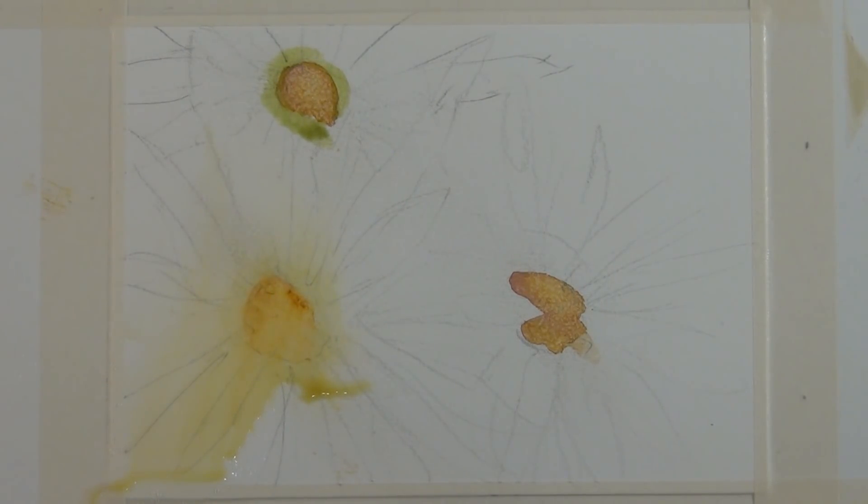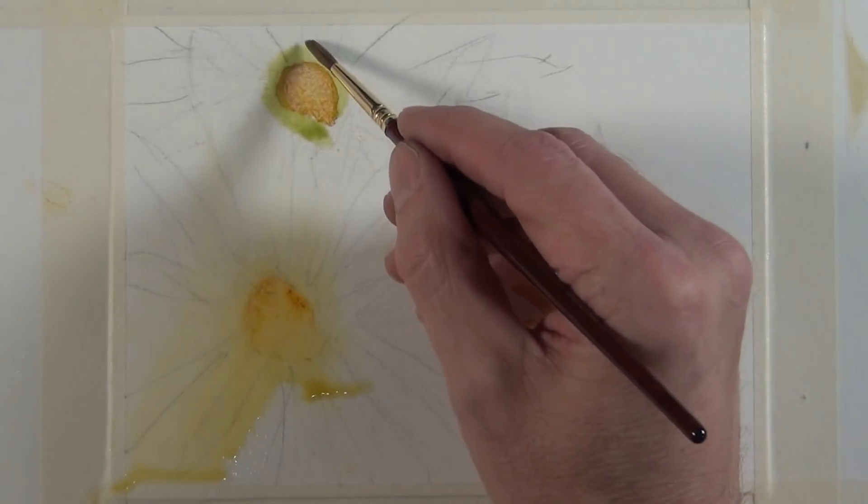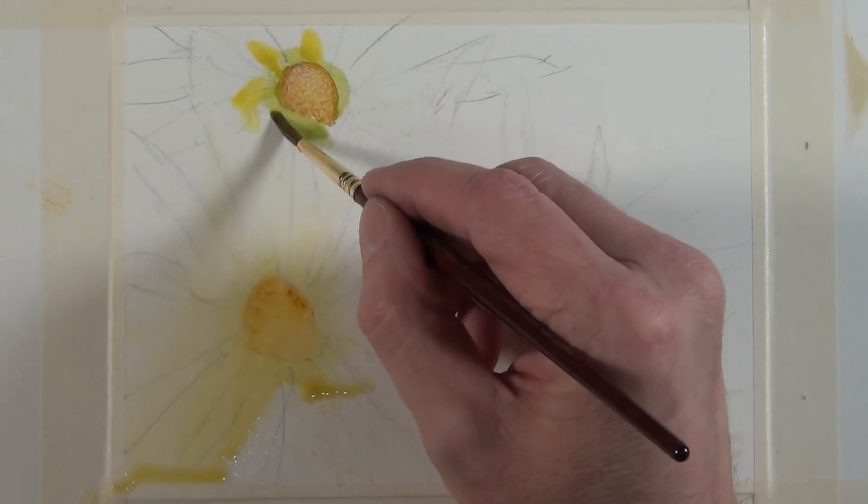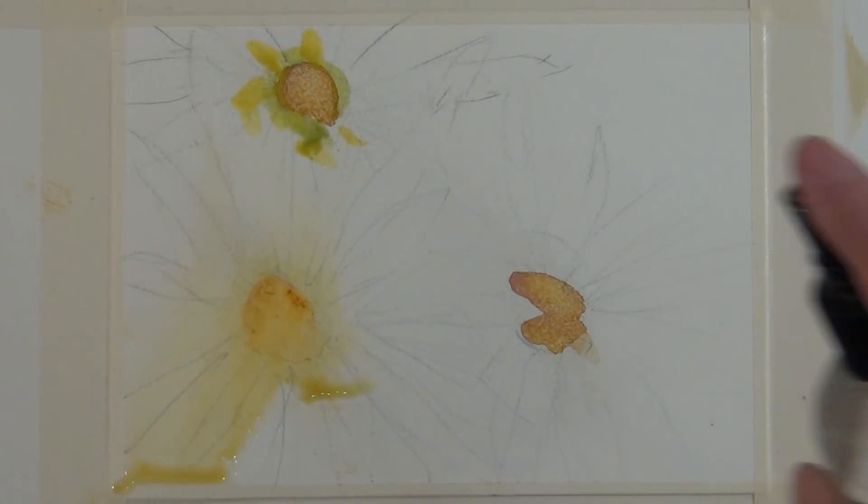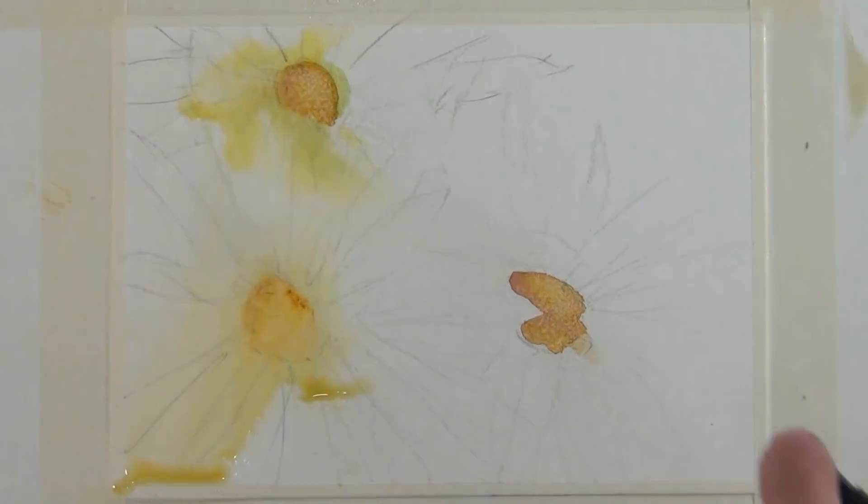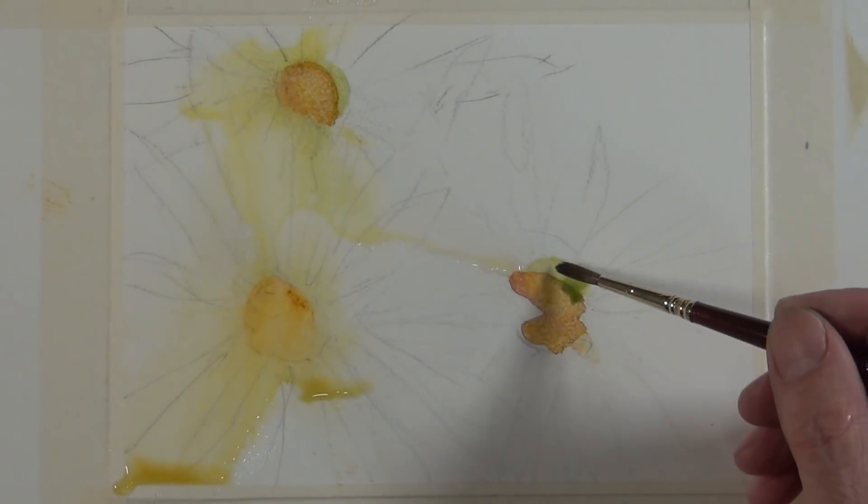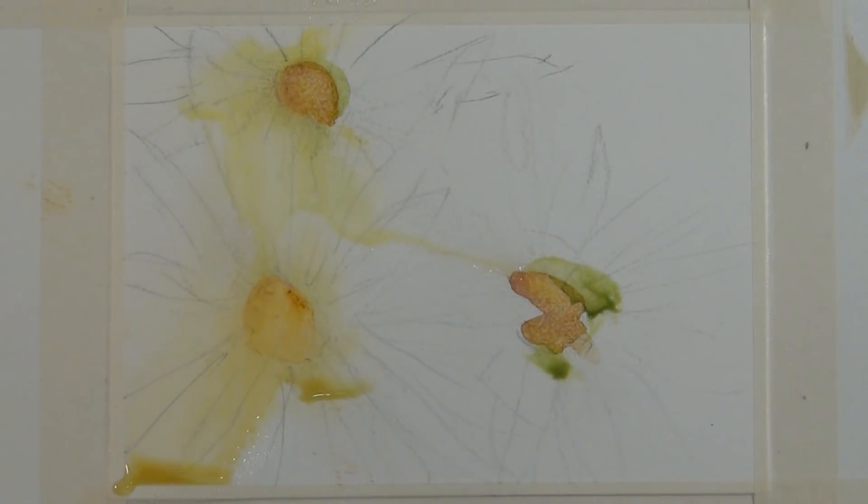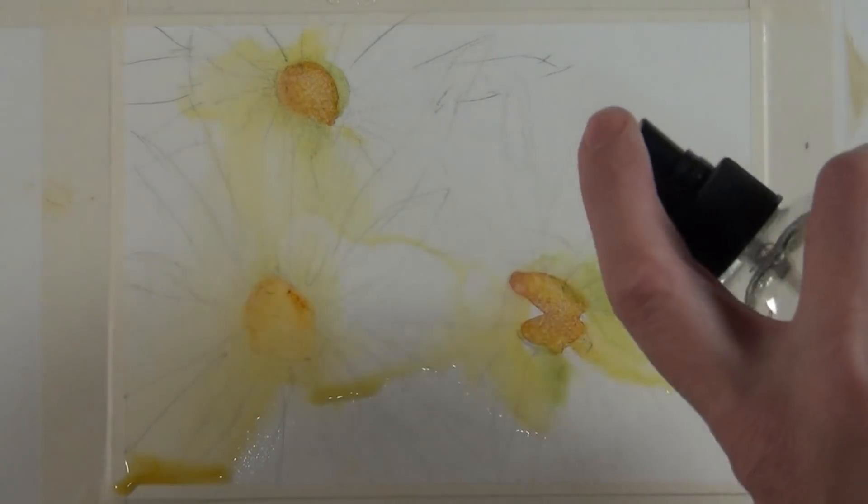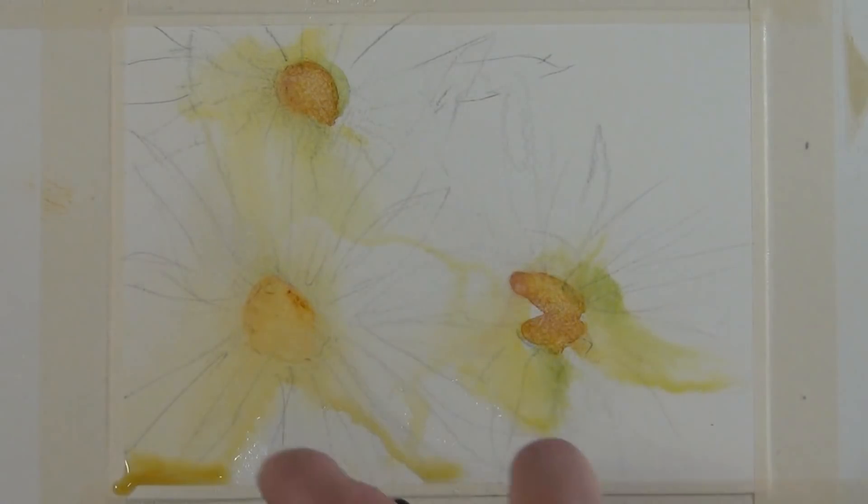And I take the same approach here with the other two flowers, putting the cad yellow light and sap green and then spraying it out with a fine mist spray bottle. And here I do it to the third flower. When I do use a spray bottle, I rarely spray it straight at the paper. I'm normally using it at an angle to create some sort of a directional flow with the spray.